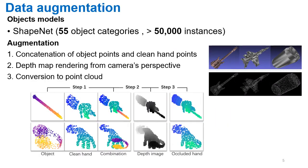For object augmentation, the object models of ShapeNet are used. We have selected 55 object categories and more than 50,000 different object instances. The augmentation consists of three steps. Firstly, the clean hand points and object surface points are combined or concatenated, where the object pose is randomly sampled around the hand. Secondly, the depth map of the combined point cloud is rendered to simulate the depth map from the camera's perspective. In the final step, we convert the depth map back into the point cloud.